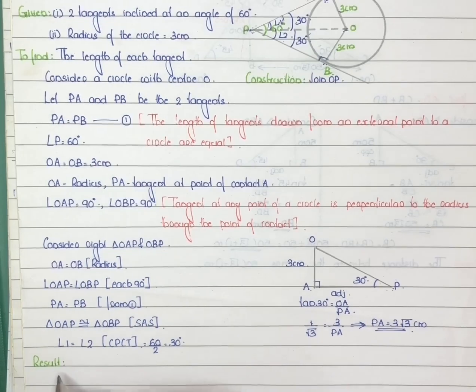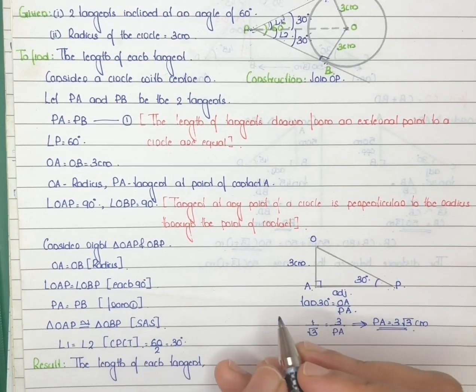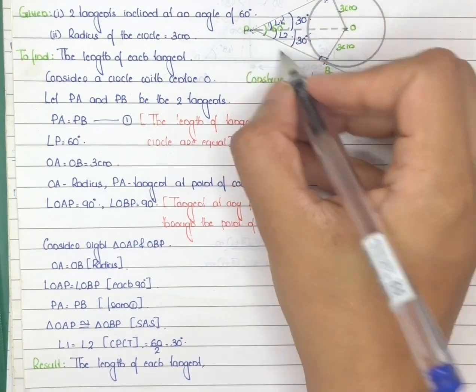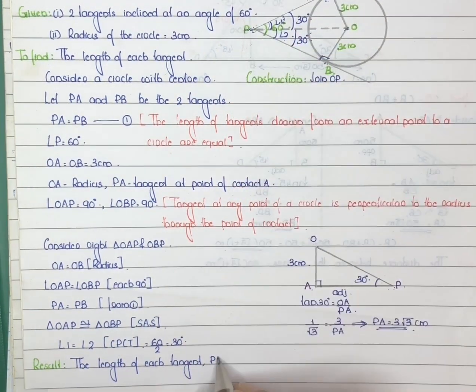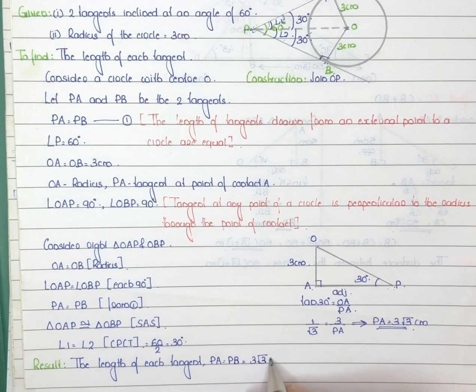Result: the length of each tangent PA equal to PB equal to 3 root 3 centimeters.